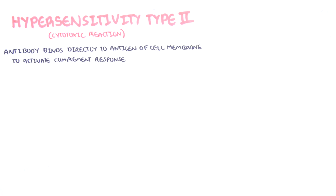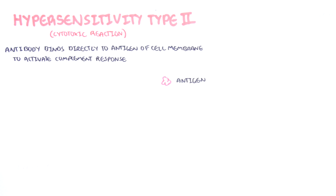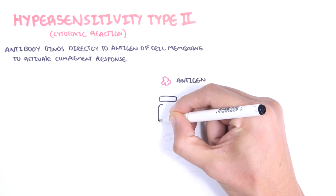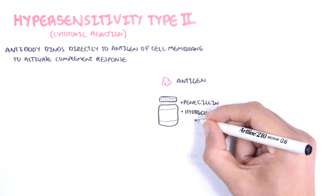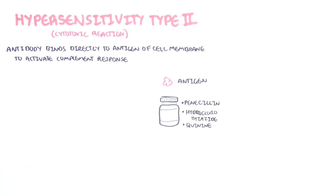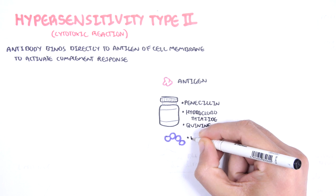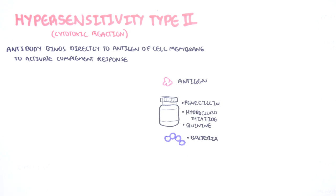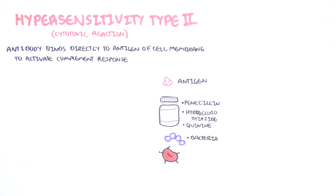Hypersensitivity type 2 is an antibody-mediated response against an antigen on the surface of cell membranes. This antigen can be, for example, a particular drug such as penicillin, hydrochlorothiazides, and quinines, which in rare cases can be found on the surface of red blood cells and platelets. Another example could be part of a bacteria, or the rhesus antigen, where a rhesus-negative person mounts an antibody response against a rhesus-positive red blood cell.